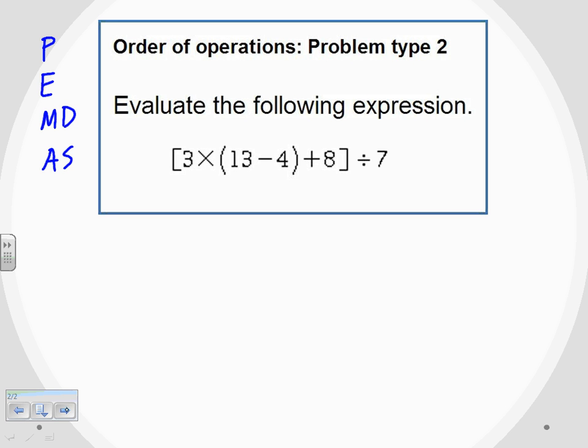Many of you remember this by please excuse my dear Aunt Sally. I like to write it this way so that it clearly shows you that multiplication and division get done together, and addition and subtraction get done together, not addition and then subtraction. But we notice at the top of our list, we have parentheses. That's where we need to start.